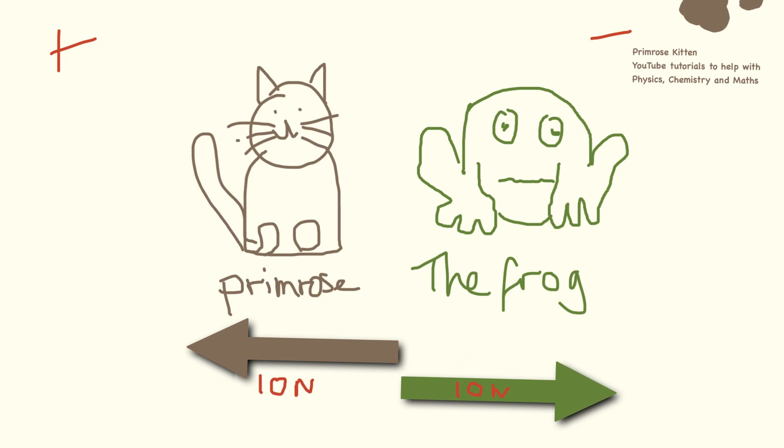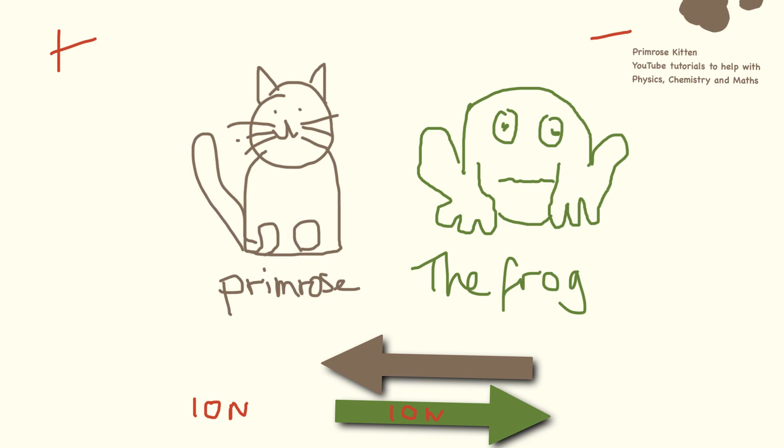If we do the same thing again and overlap those two, we can see that we have positive 10 newtons—that's from Primrose—and minus 10 newtons—that's from the froggy. So plus 10 minus 10 equals 0 newtons overall, so there's going to be no movement.